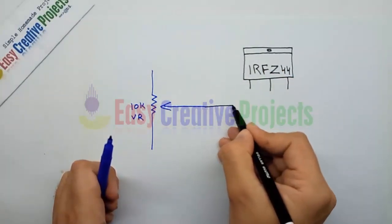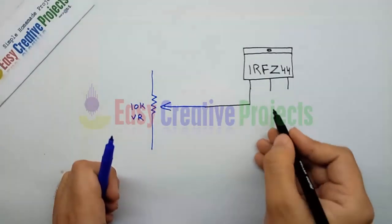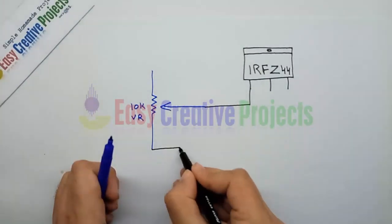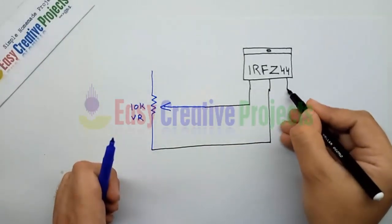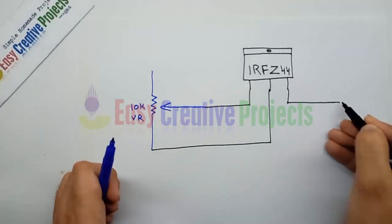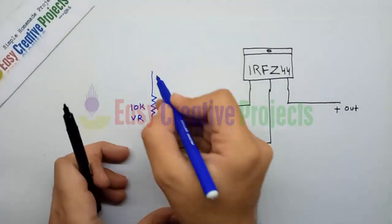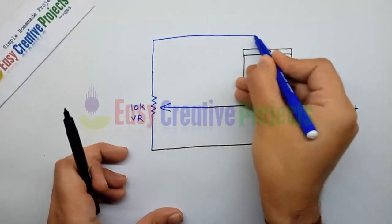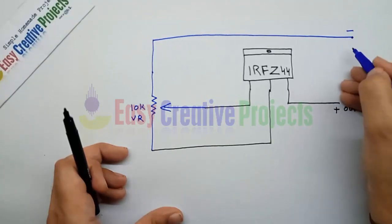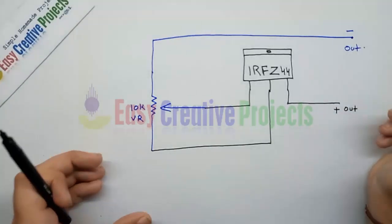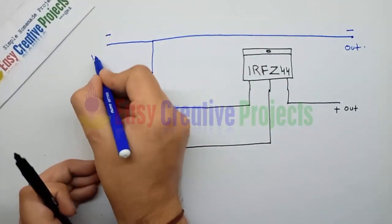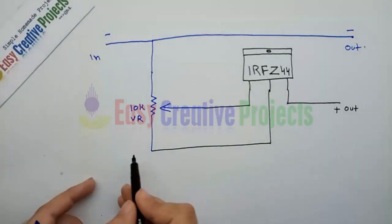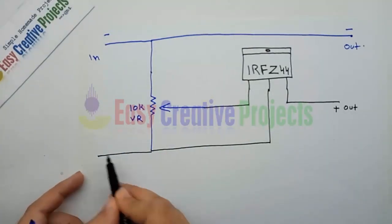Connect the second pin of the variable resistor with the first pin of the MOSFET. Now connect the second pin of the MOSFET with the third pin of the variable resistor. The third pin of the MOSFET is used for positive output and the first pin of the variable resistor is used for negative output. The first pin of the variable resistor also is used for negative input and the second pin of the MOSFET is used for positive input.